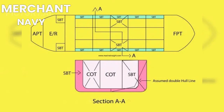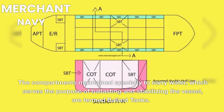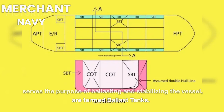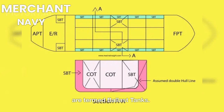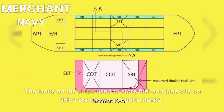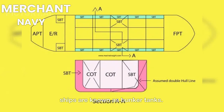Ballast tanks. The compartments maintained specially to carry water, which serves the purpose of ballasting and stabilizing the vessel, are termed ballast tanks. Bunker tanks. The tanks on ships used to store fuel and lube oils are known as bunker tanks.